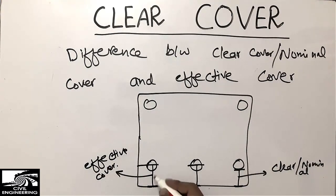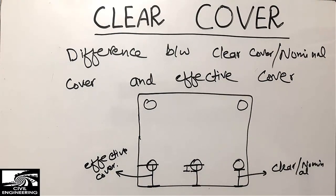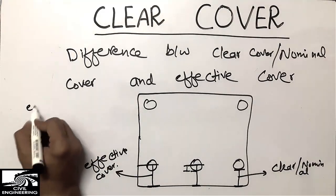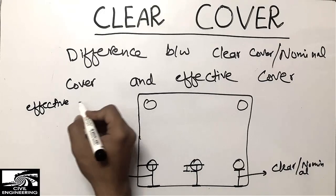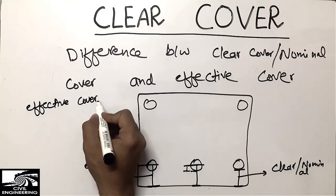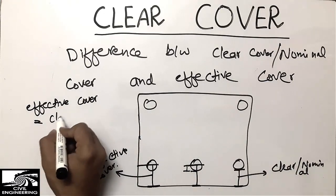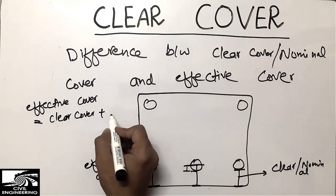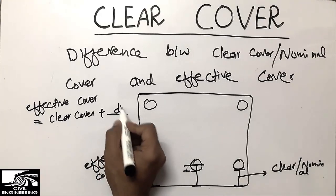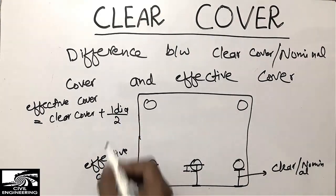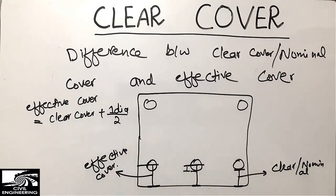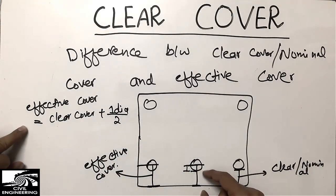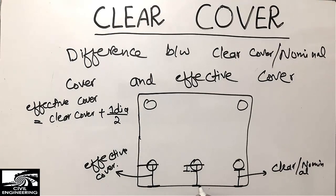So the effective cover equals the clear cover plus half the diameter of the bar. That is: Effective Cover = Clear Cover + (Diameter of bar / 2). The clear cover is always less than the effective cover because it only goes to the surface of the bar, while effective cover includes half the bar diameter.